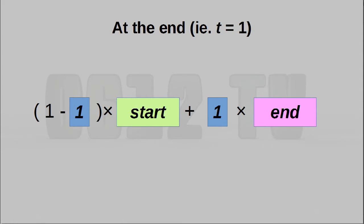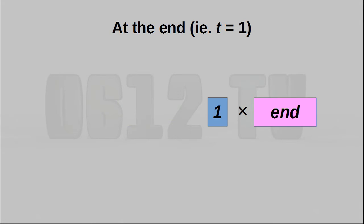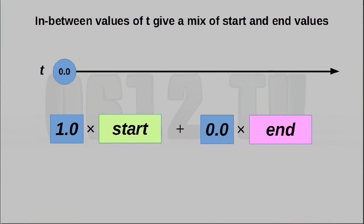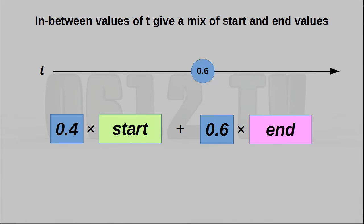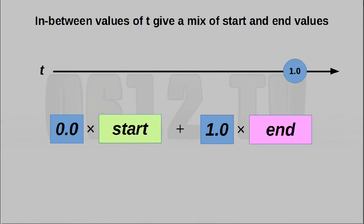Similarly, when we're at the very end — in other words, t equals 1 — we have no weightage whatsoever from the starting term and we have maximum weightage from the ending term. So as you can imagine, when t takes on some sort of middle value, we're going to get partial weightage from each side. Depending on which side t is closer to, that side is going to contribute more weightage to the final answer.